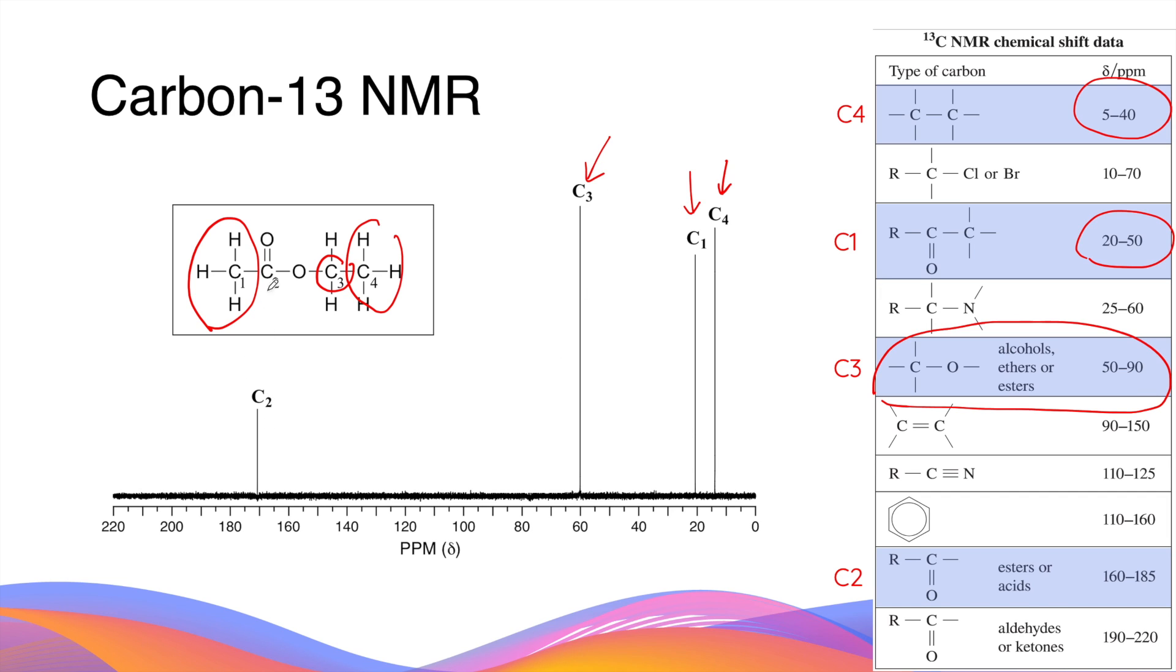Lastly, carbon-2 is my carbonyl carbon in the ester molecule. In the data sheets, the carbonyl carbon has a much higher chemical shift between 160 and 185 ppm. This is why in the spectrum, carbon-2 is on the far left hand side, very far away from the other signals.